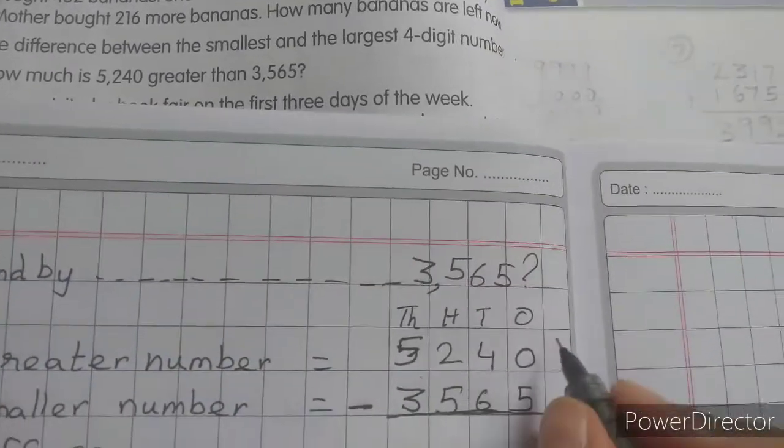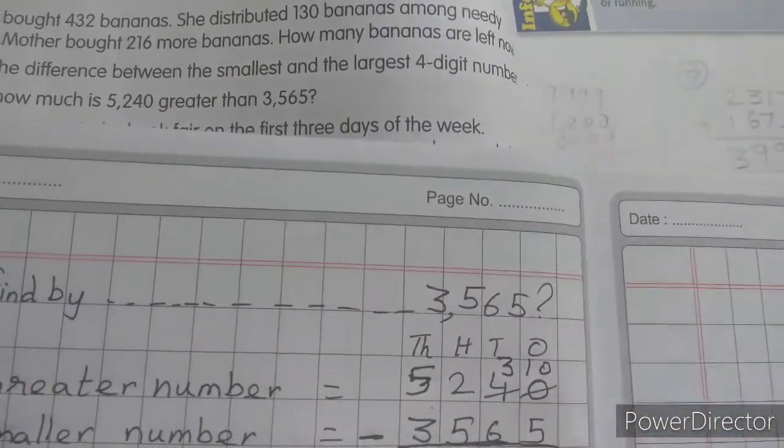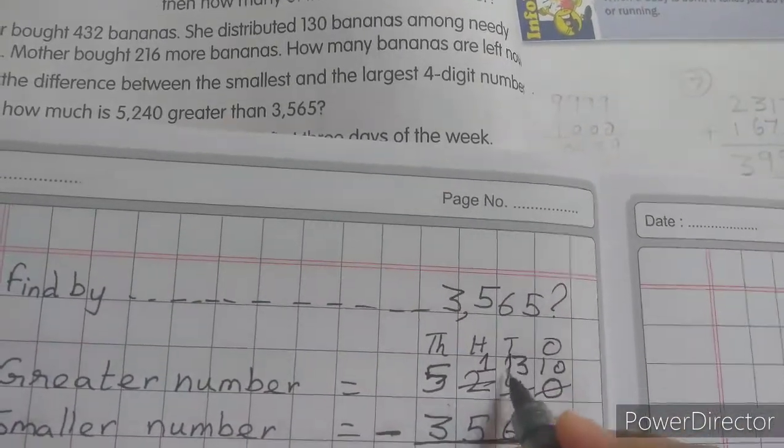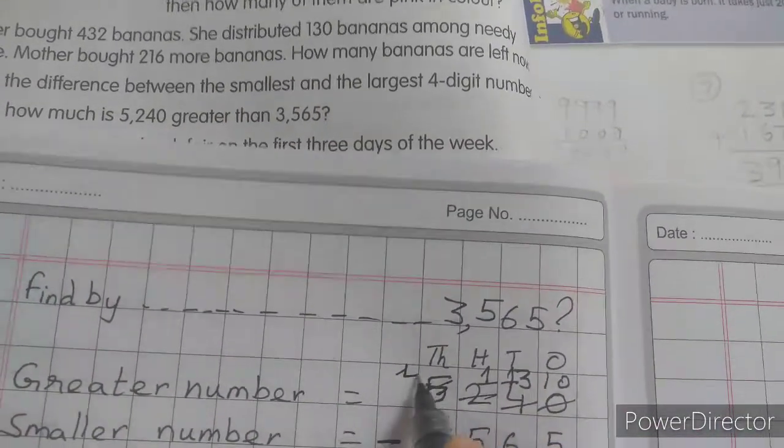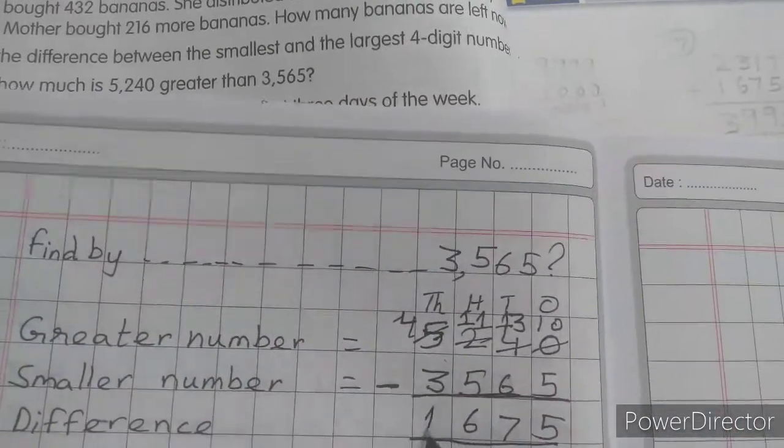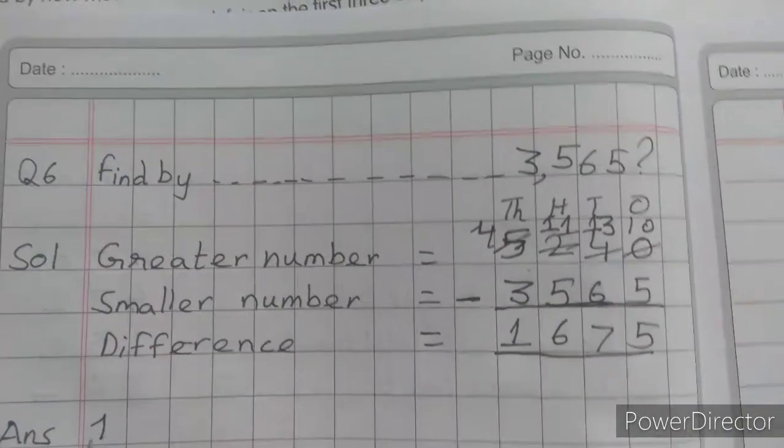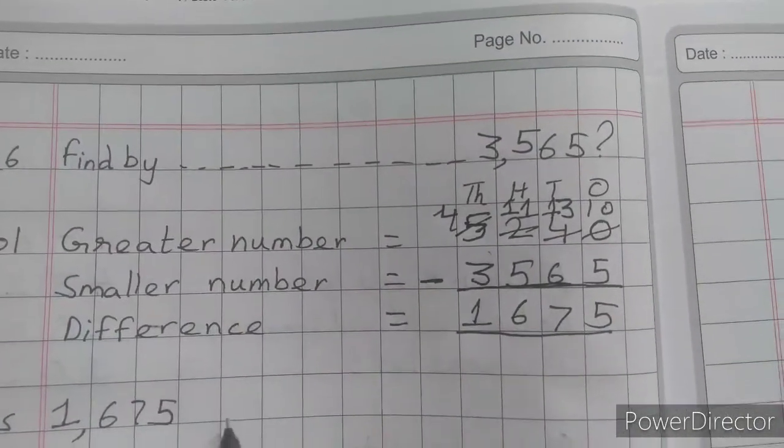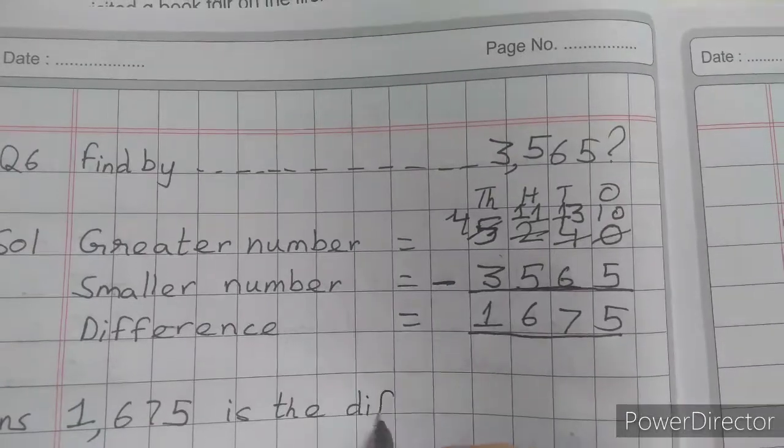Now can we subtract 5 from 0? No, so we will borrow. This becomes 3, this becomes 10. 10 minus 5 is 5. We can't subtract from here, so this becomes 1, this becomes 13. 13 minus 6 is 7. Again we can't subtract, then again we will borrow. This becomes 4, this becomes 11. 11 minus 5 is 6. 4 minus 3 is 1. So the difference is 1,675. Here we will write: 1,675 is the difference.